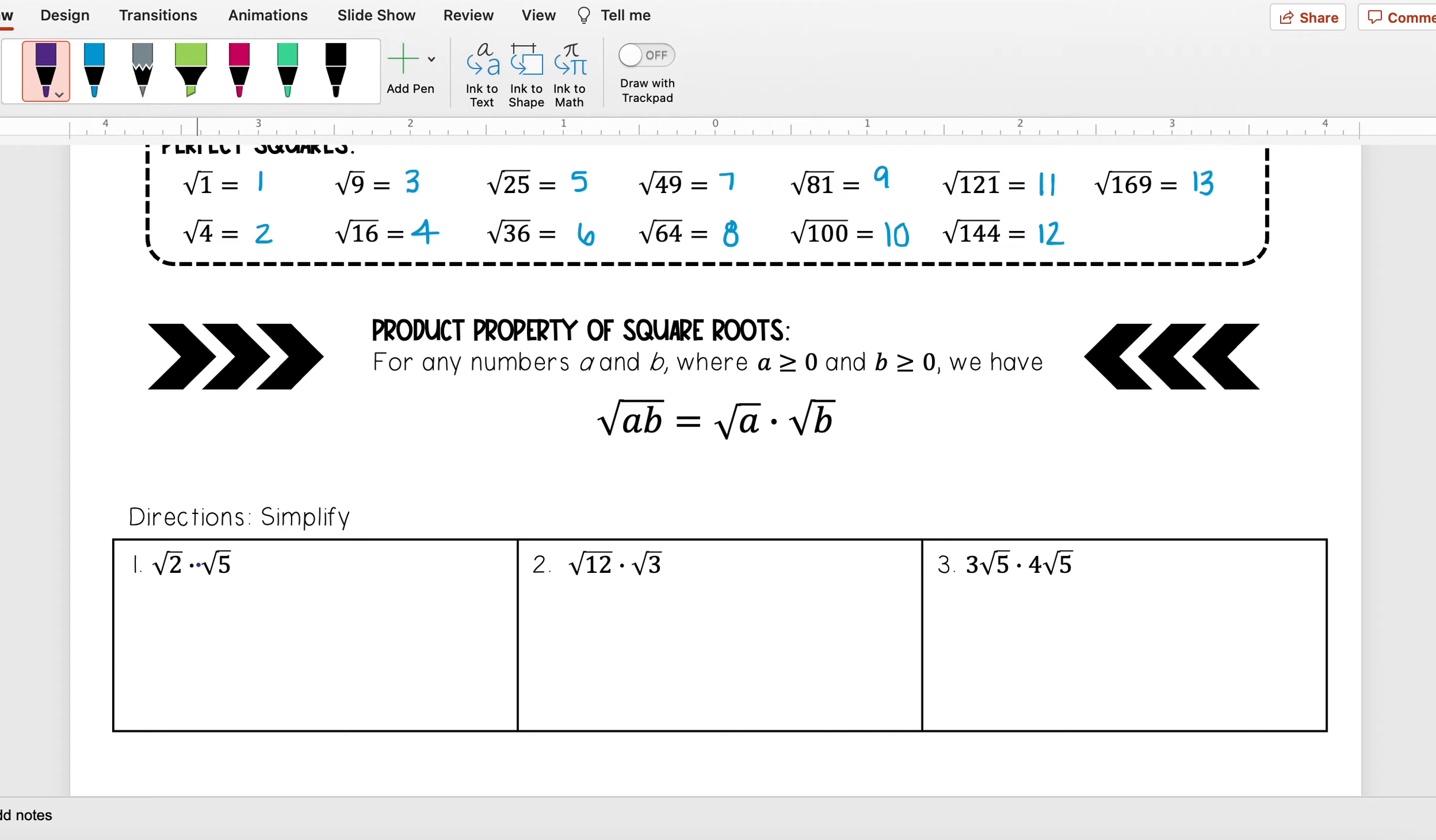Here I have the square root of 2 times the square root of 5. Well, this property tells me that this is the same thing as taking the square root of 2 times 5. And when I take the square root of 2 times 5, 2 times 5 equals 10.